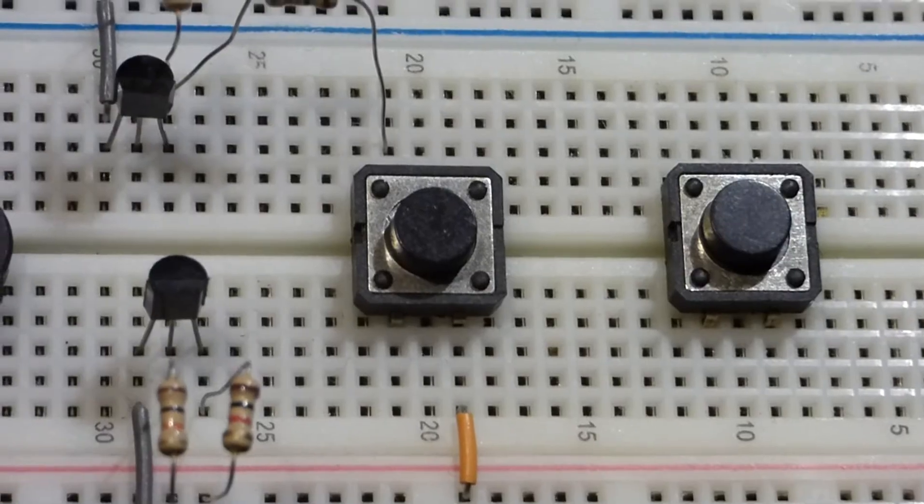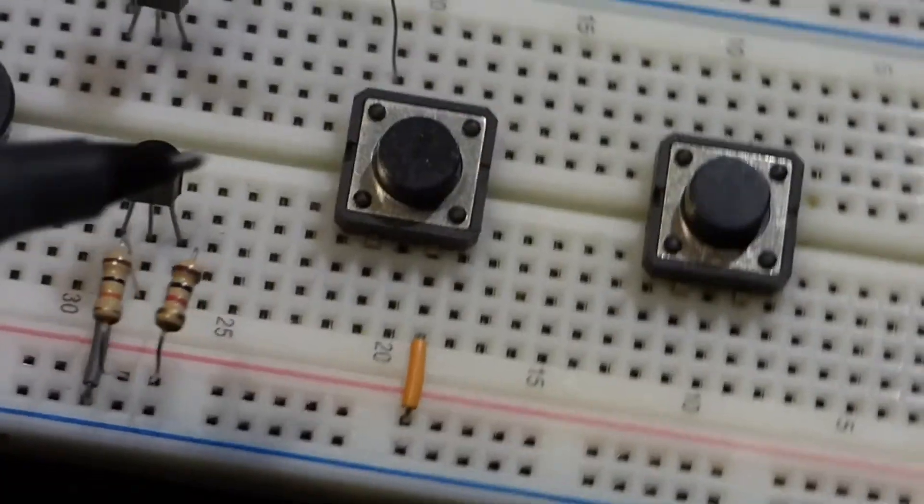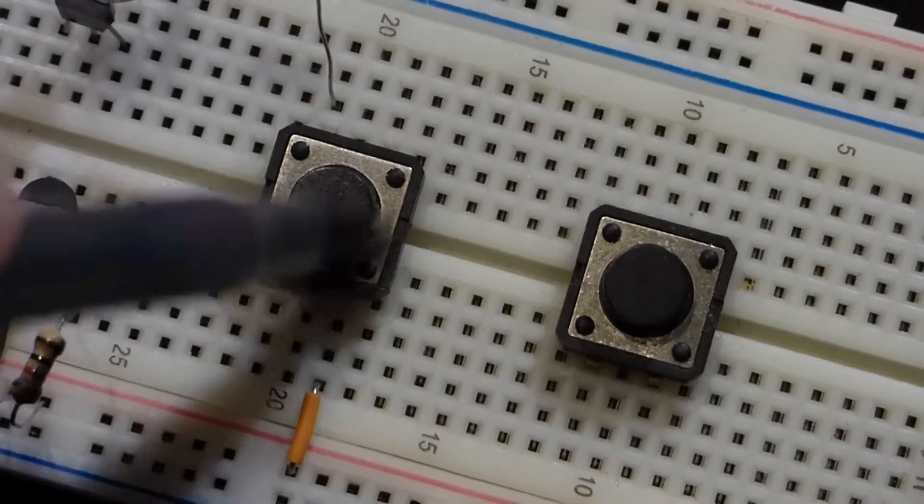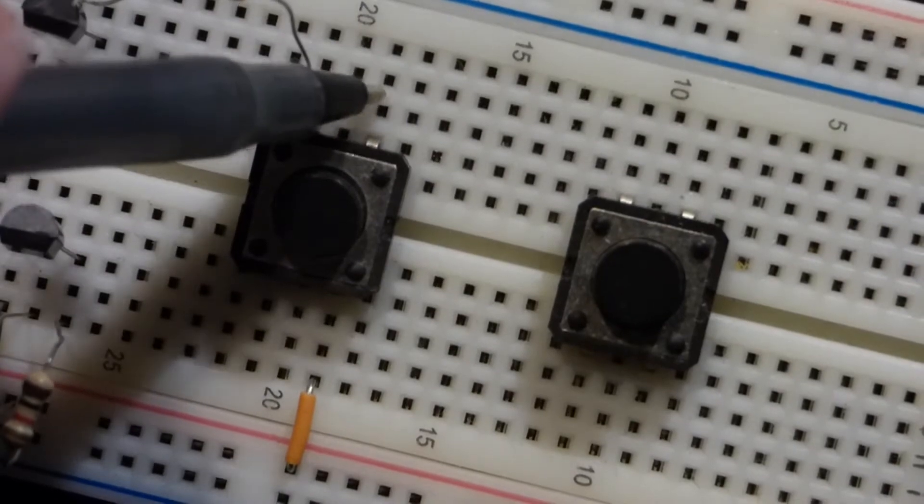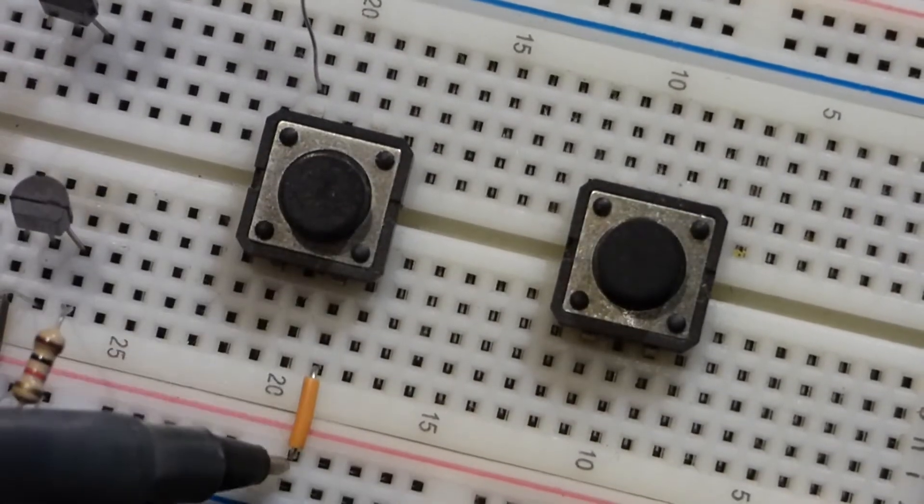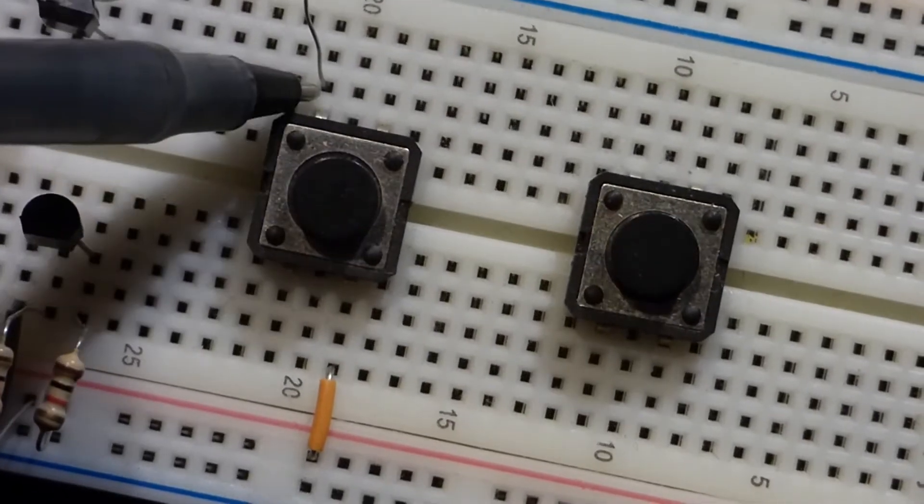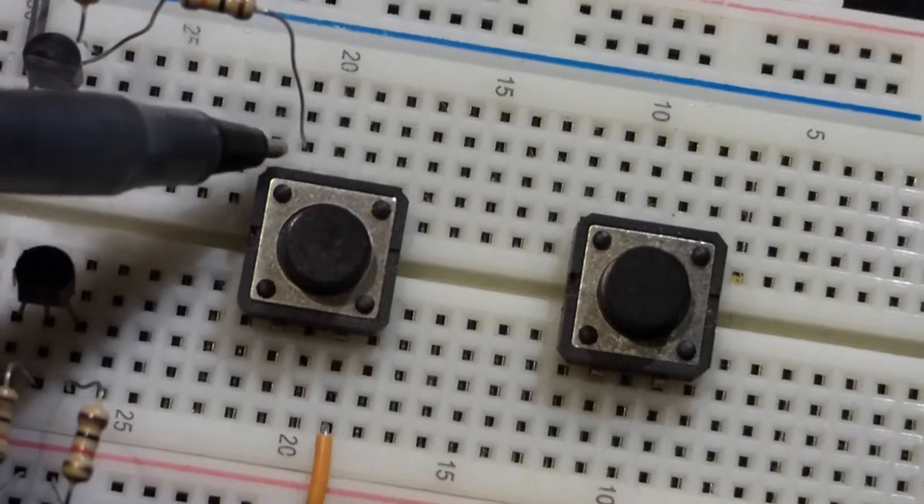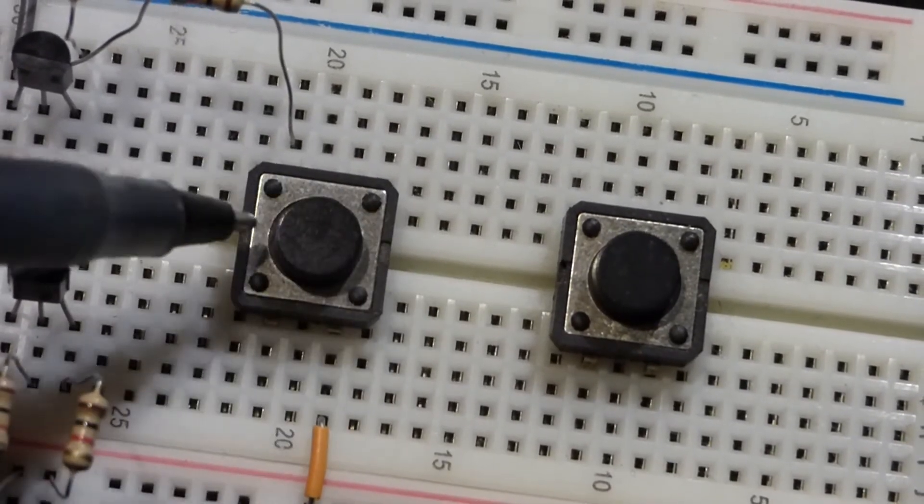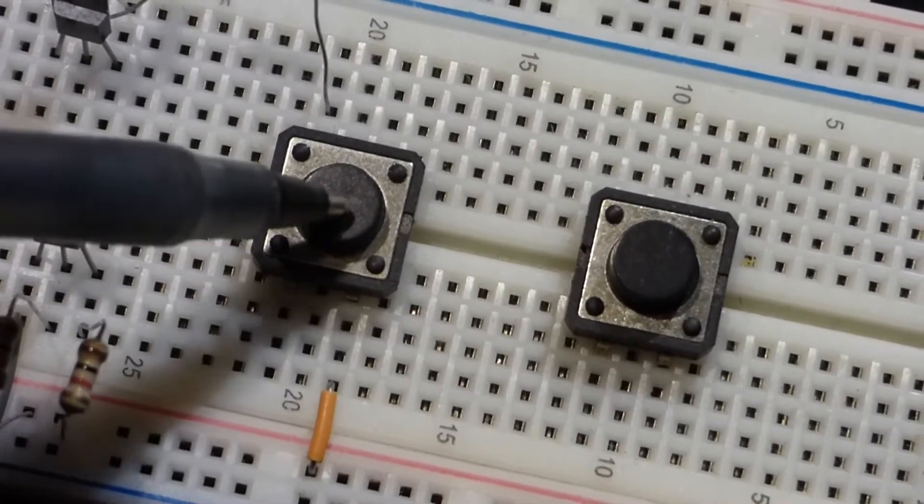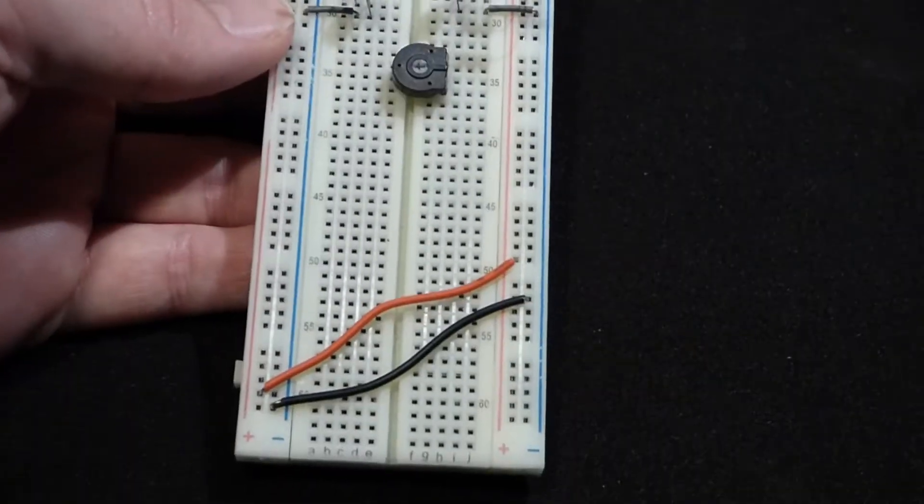Now remember, with these push-button switches, all the ones that I have, this top row here is always connected. So I could plug something in right there and it will always be connected to that positive rail. Same with this lower rail. If I connect something here, it'll always be connected to this row. The separation is from top to bottom. So when I push the switch down, that's when the top and bottom areas connect.